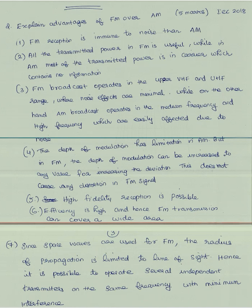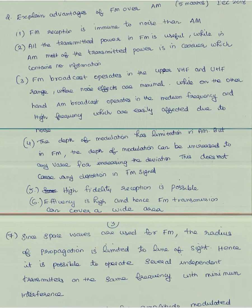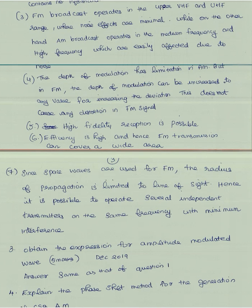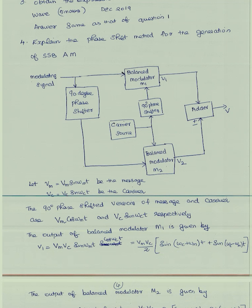Another advantage of FM is that high fidelity reception is possible. The efficiency is high and therefore FM transmission can cover a wide area. Since space waves are used for FM, the radius of propagation is limited to line of sight, hence it is possible to operate several independent transmitters on the same frequency with minimum interference.